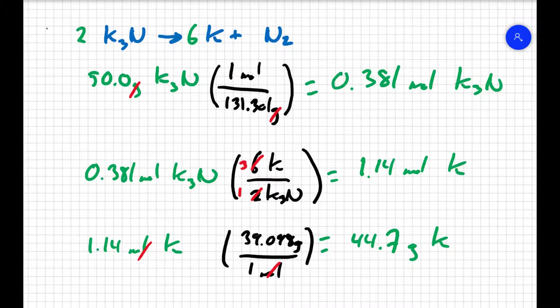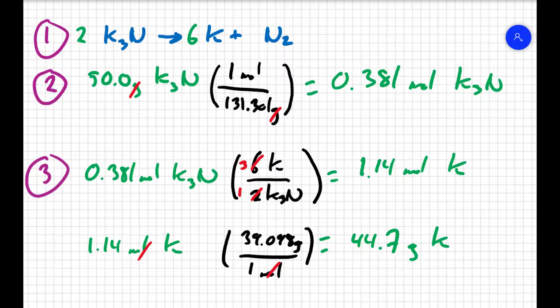How we did that is we started with our balanced equation, converted our data to moles, used the ratios in our balanced equation to predict what we're looking for, and then converted our data back to grams at the end because the question was looking for mass.